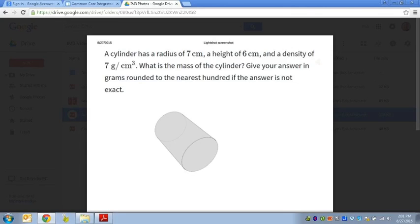Let's try this problem here as an example, and then I'll let you do the rest on your own. A cylinder has a radius of seven centimeters and a height of six centimeters, and the density is seven grams per centimeters cubed. What is the mass of the cylinder? It says give grams rounded to the nearest hundred if the answer's not exact. So remember we just talked about it. Density, let's write down the formula.